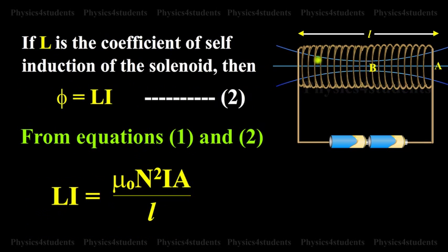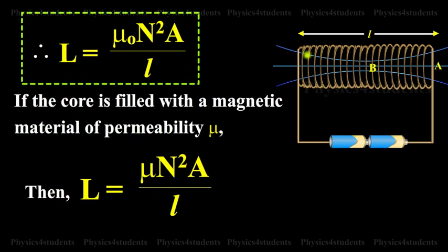If L is the coefficient of self-induction of solenoid, then phi equals L I. From equations 1 and 2, L I equals mu naught N squared I A by L. Therefore, L equals mu naught N squared A by L.